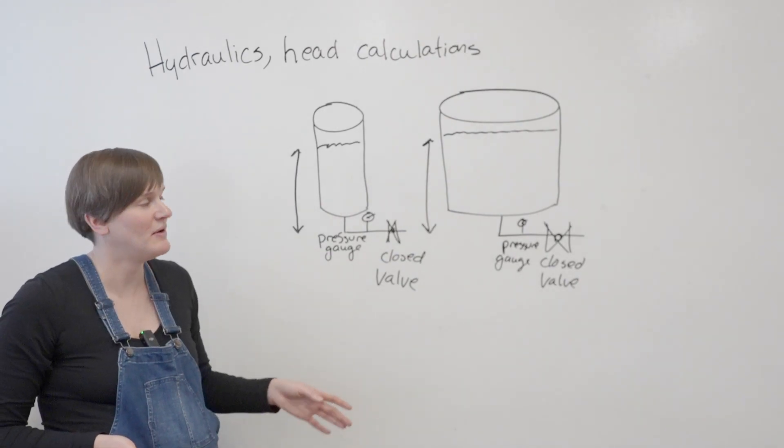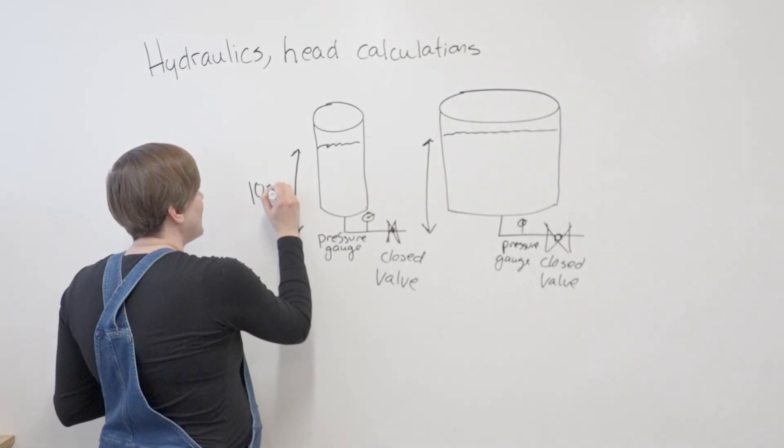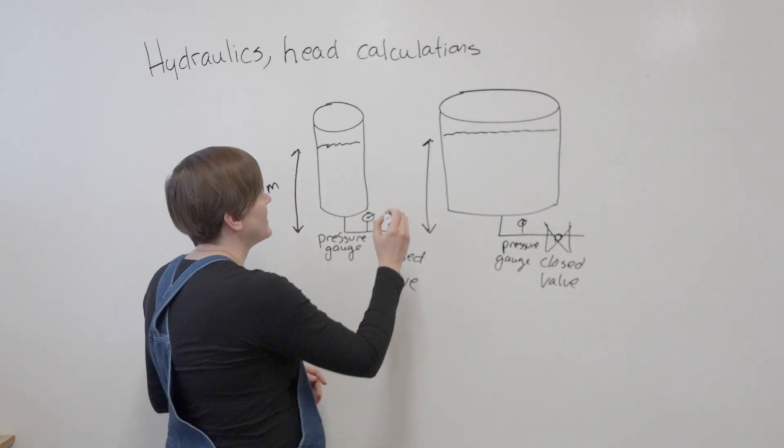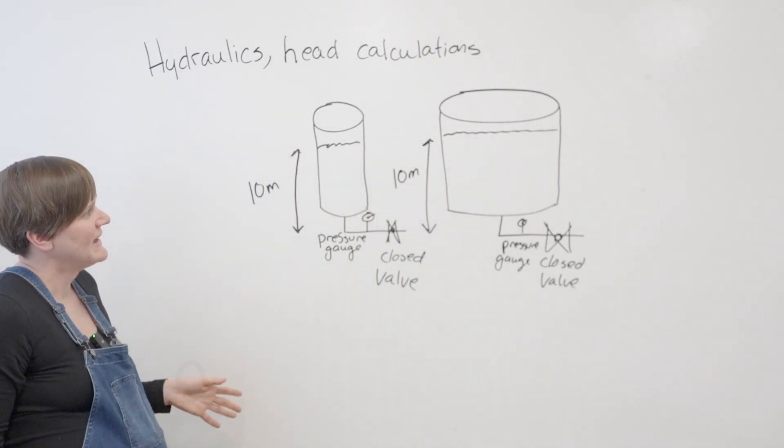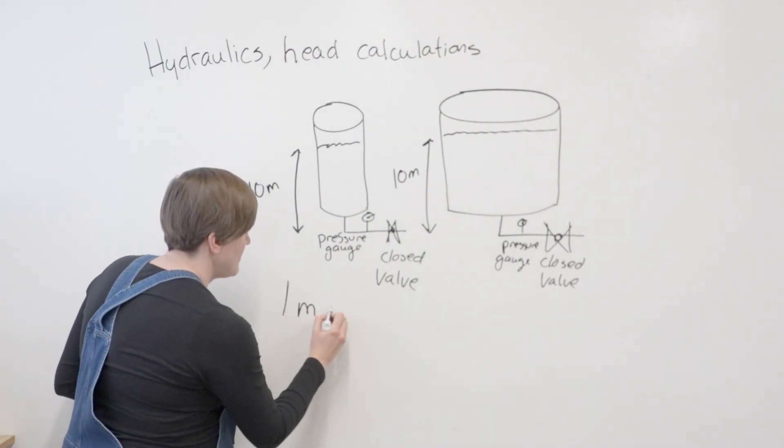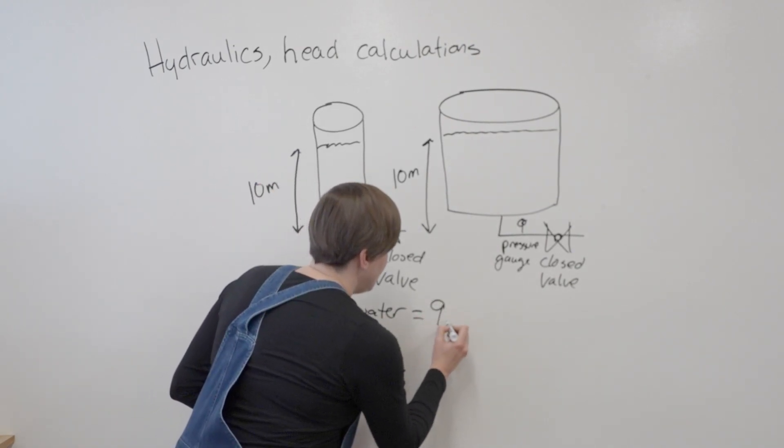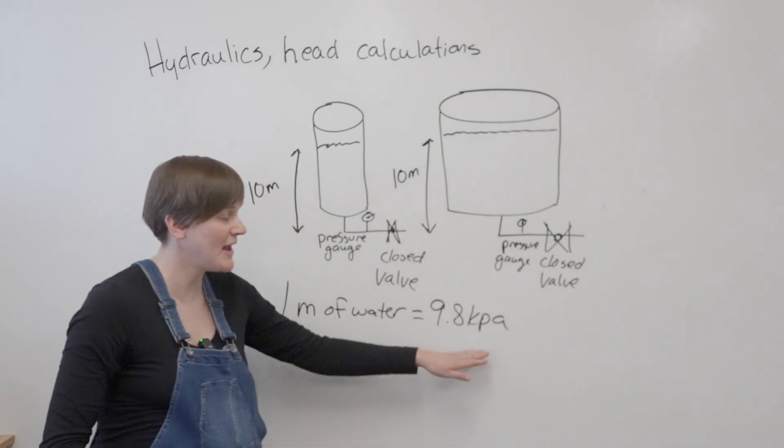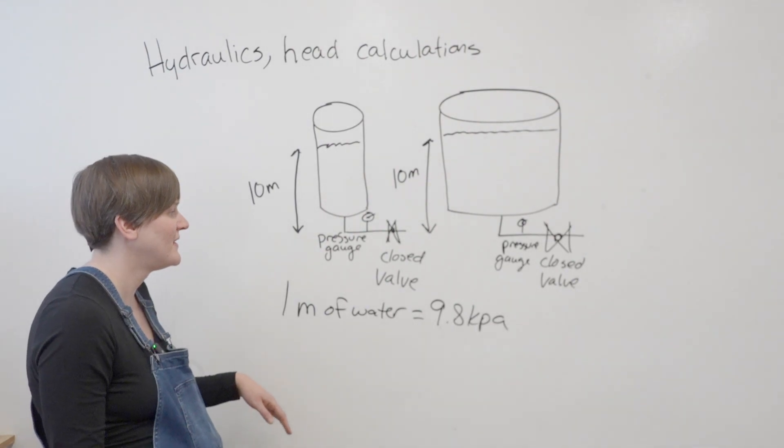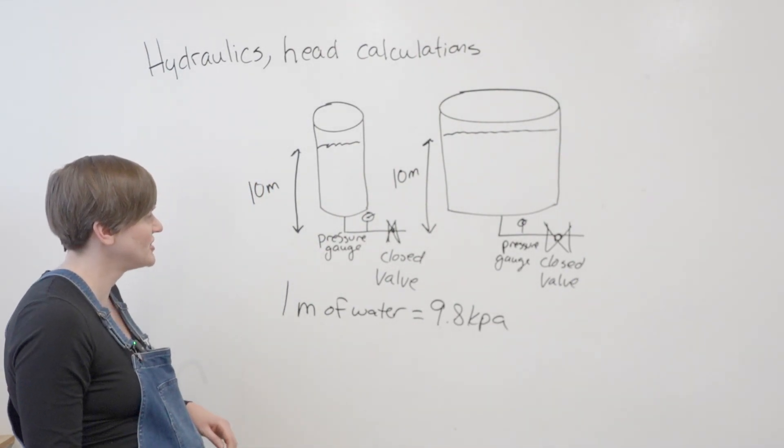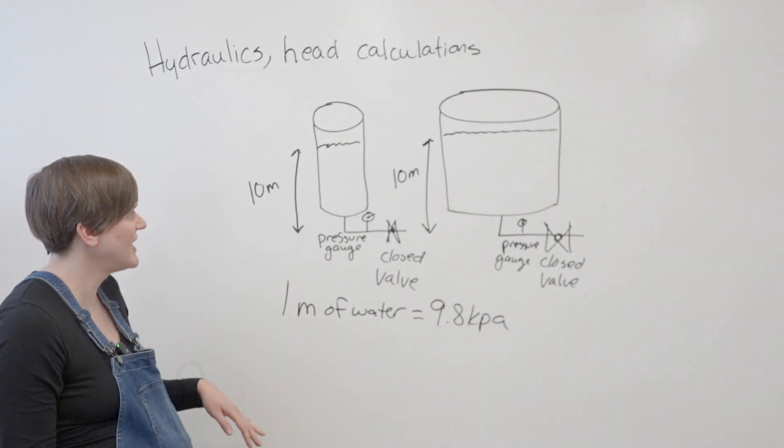And there's actually a way to calculate what this pressure reading is going to be. So let's just say you have 10 meters from the height of water to where the pressure gauge is. Now on your formula sheet you will see that one meter of water is equal to 9.8 kPa. KPa is a unit of pressure like psi, but this would be the metric measurement for pressure. So for every one meter of water, static head pressure is 9.8 kPa.